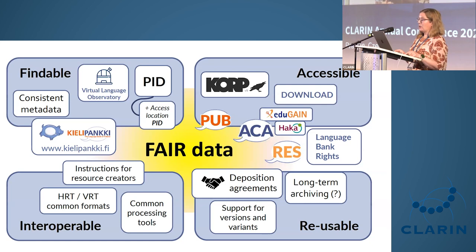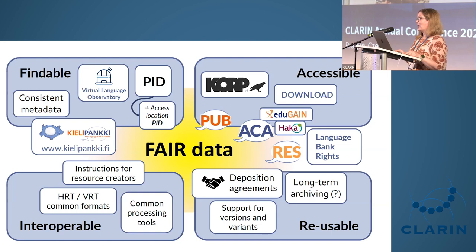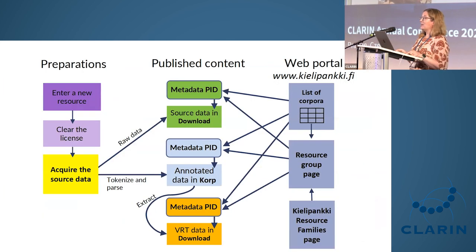They support restricted corpora and different versions and variants of the same resource — for example, the same resource can be available both for download and via Korp, and there can be updates and upgrades. Resource groups contain all different variants and versions. The process involves: creating a preliminary metadata record, assigning a PID, clearing the license, acquiring the source data, then publishing for download, running tokenization, annotation, language identification, named entity recognition, making it available via Korp, and finally creating an annotated download version.